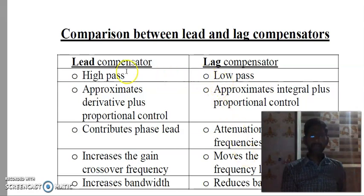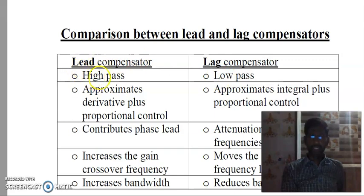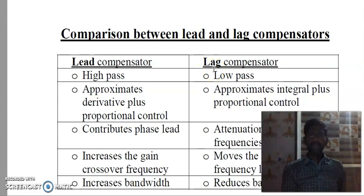To remember: the lag compensator acts as a low pass filter and the lead compensator acts as a high pass filter. A useful memory trick — the word 'lag' has three letters, and the word 'low' also has three letters. So the lag compensator acts as a low pass filter. Many exam questions will ask about this, and many students get confused. Just remember: lag equals low pass.